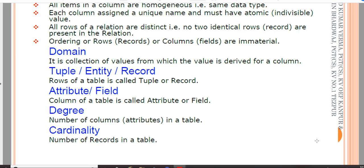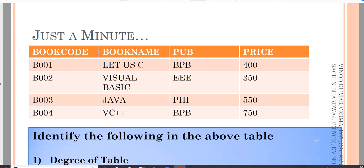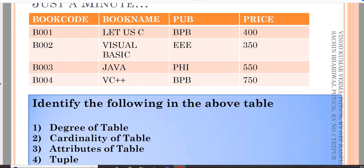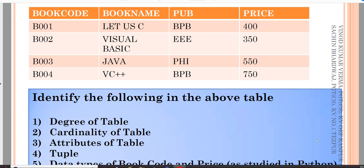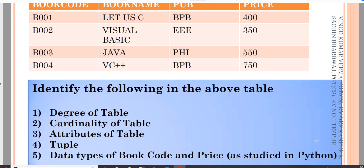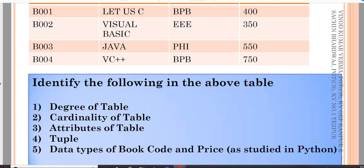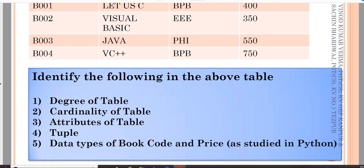If you see here, there is a table called Book with columns: Book Code, Book Name, Publisher, and Price. There are four columns and four rows. So the degree of the table is four and the cardinality is also four. Cardinality means the number of records, degree means the number of columns, attributes means columns, and tuples means records.